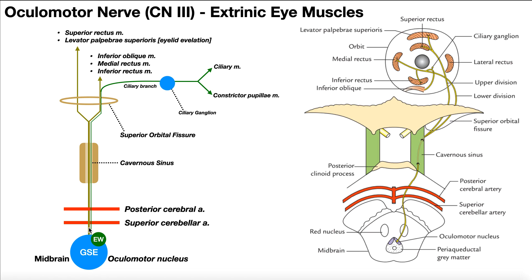We're initially going to exit the midbrain and cross two arteries. We're going to go over the superior cerebellar artery and then underneath the posterior cerebral artery. If you look closely at the picture, you'll see that. And we're going to keep traveling anteriorly.